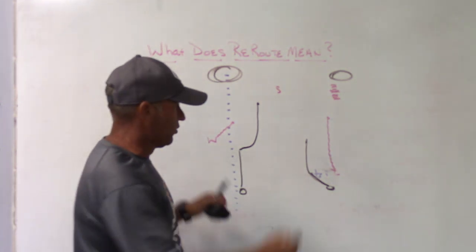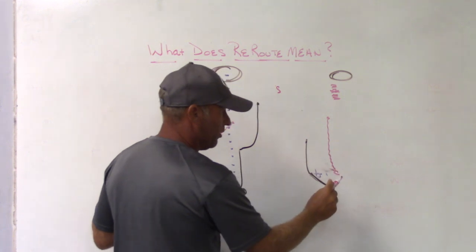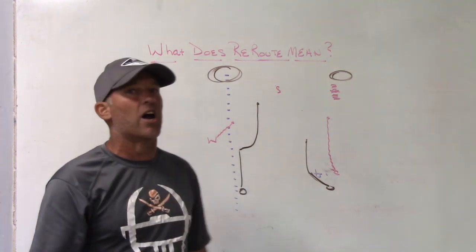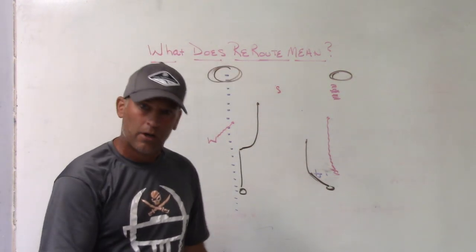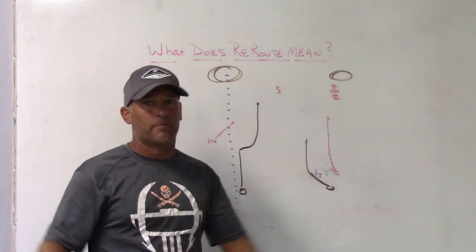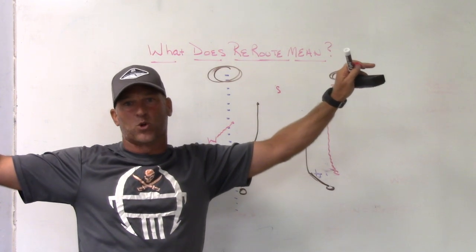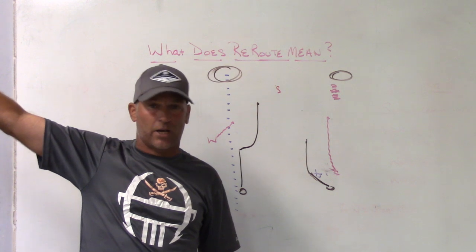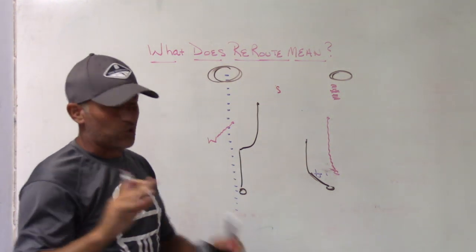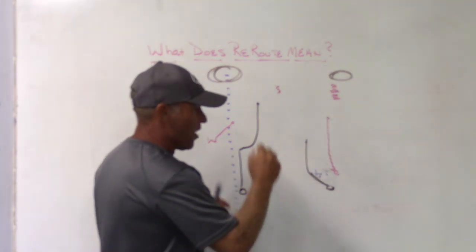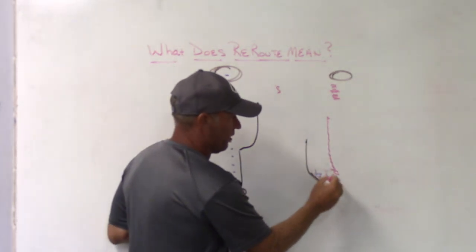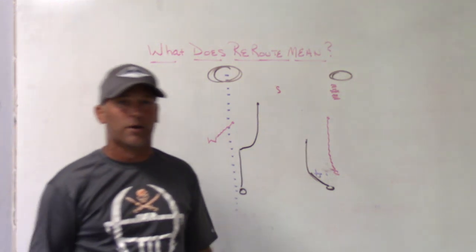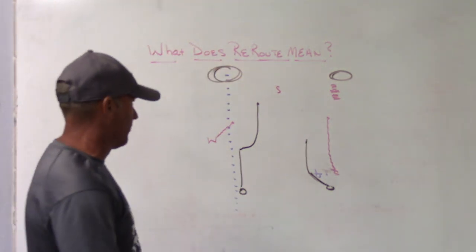Reroutes don't necessarily mean you have to get hands on. The only time you really need to get hands on effectively is a route working vertical or trying to work outside toward the corner — those need to be shoved further inside. If a receiver on his own volition brings himself inside, you don't need to over-aggressively chase hands on and get beat back outside. He's already rerouted himself. With him rerouted inside, the corner can sink with hips inside, help alleviate stress on the safety's window, and deliver back down to the flat when needed.